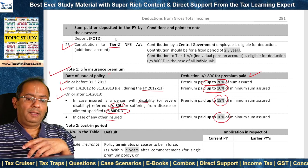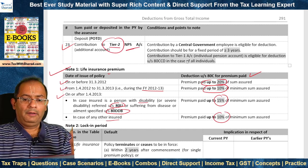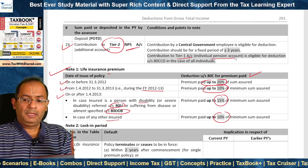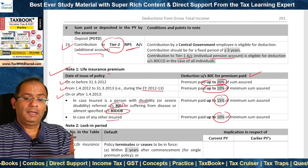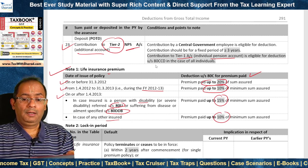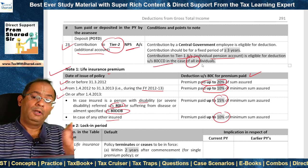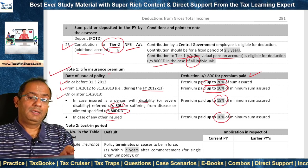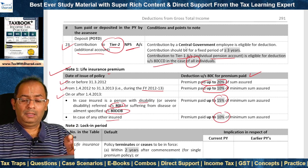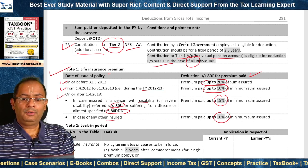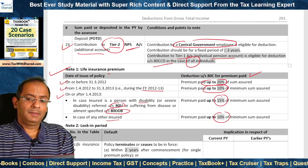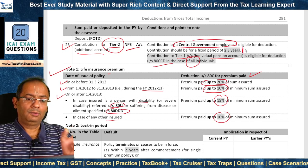Twenty-third, contribution to Tier 2 NPS account. NPS account has a Tier 1 account which is the individual pension account, and a Tier 2 account which is the additional account. Twenty-fourth, contribution to Tier 1 account is eligible for deduction under Section 80CCD in the case of all individuals. But 80C covers contribution to Tier 2 NPS account, and this is available only when such contribution is by a central government employee — not any other employee — and the contribution should be for a fixed period of 3 years or more.